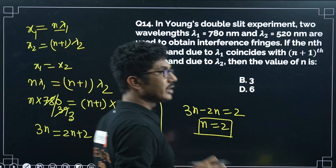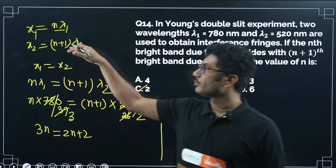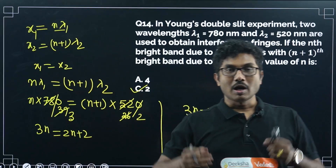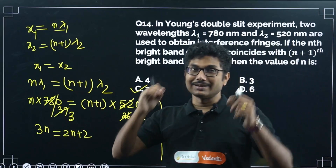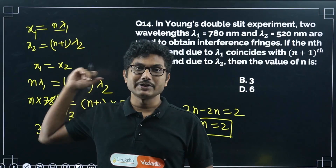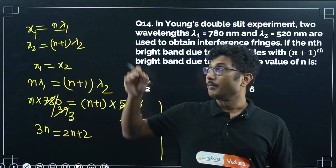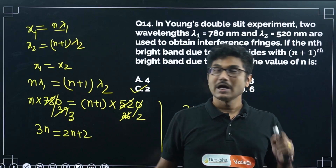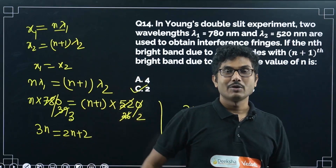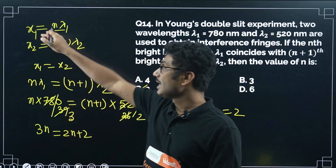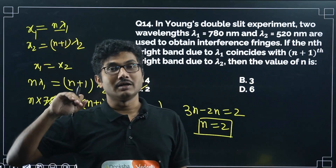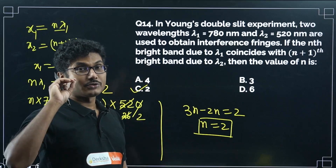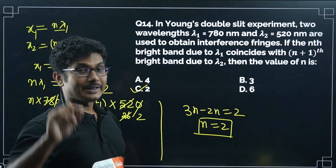Remember to recall the condition for maxima in interference and the condition for minima in diffraction — both are very similar with slight differences. In diffraction, the angular displacement and angular width are given, while in interference the path difference condition is used. Both types of questions are very important.